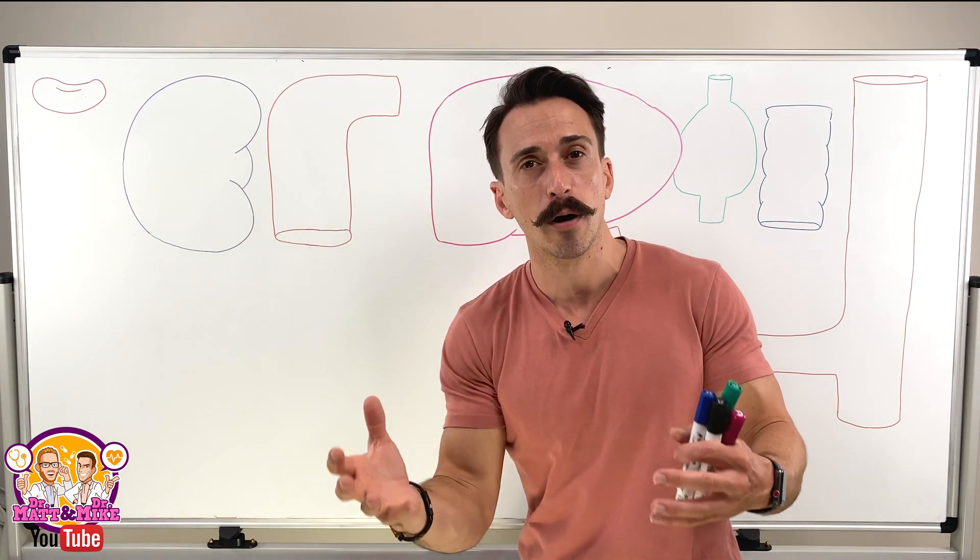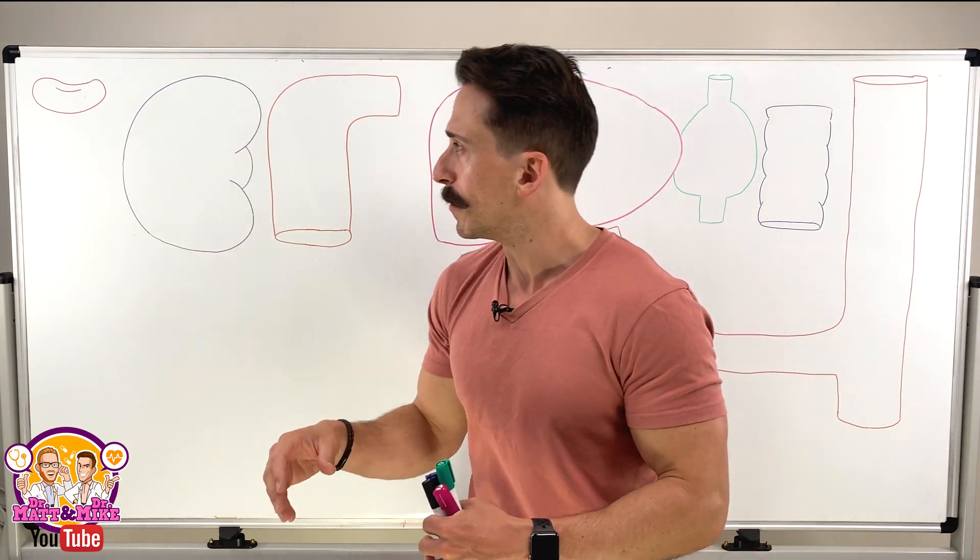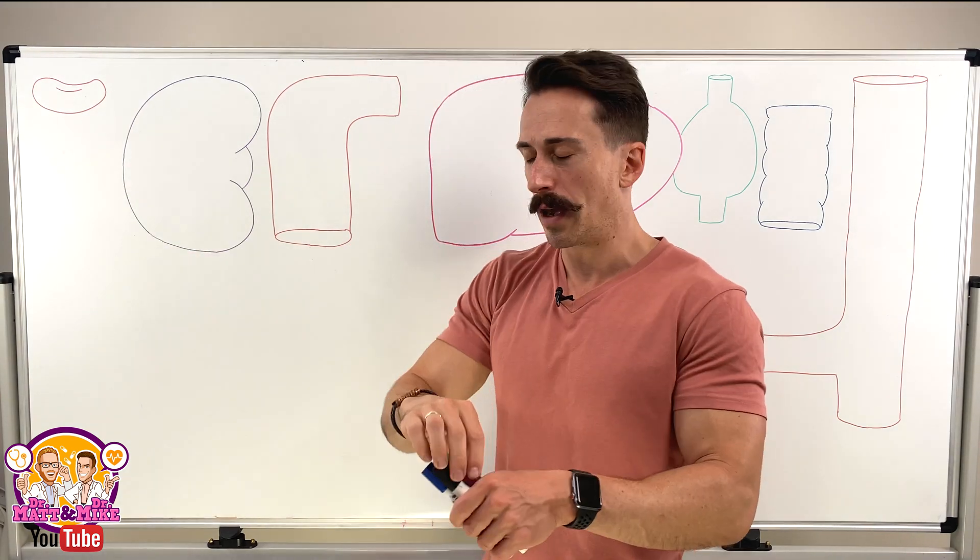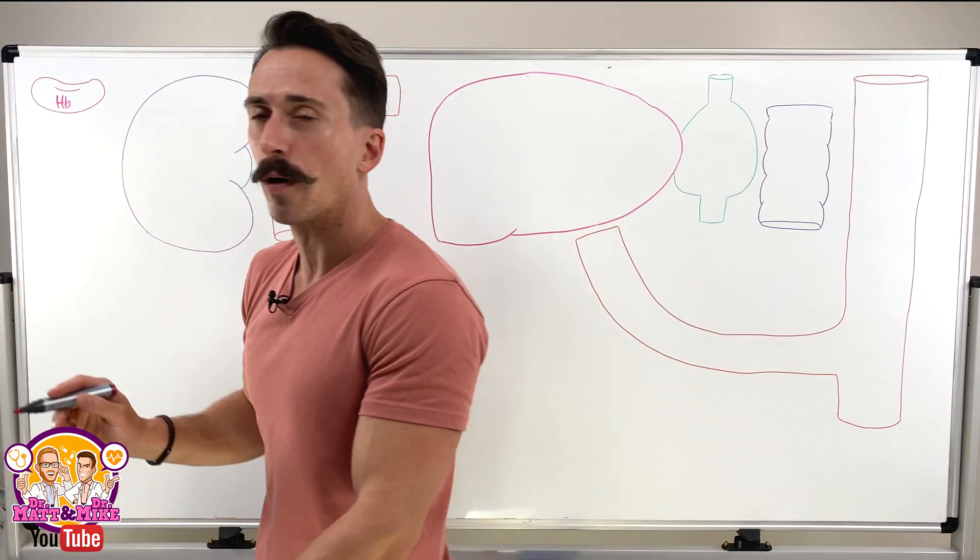The rest come from other heme proteins like myoglobin, which is the muscle equivalent of hemoglobin. So we've got our red blood cell packed full of hemoglobin. Let's pop a hemoglobin in here. Hb is how we write our hemoglobin.